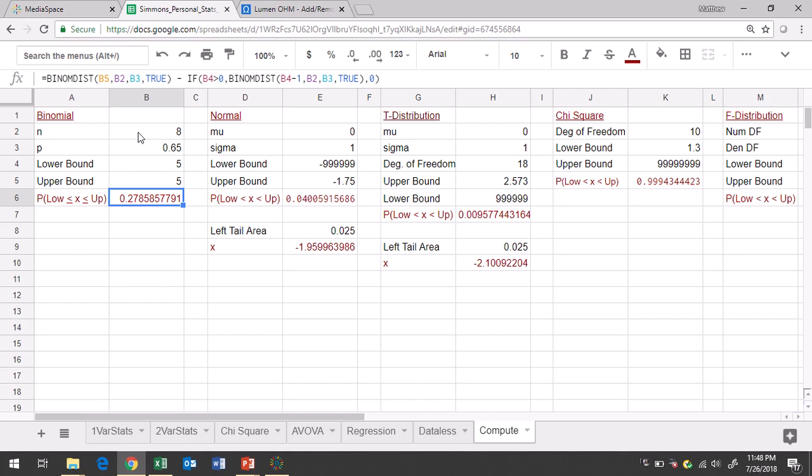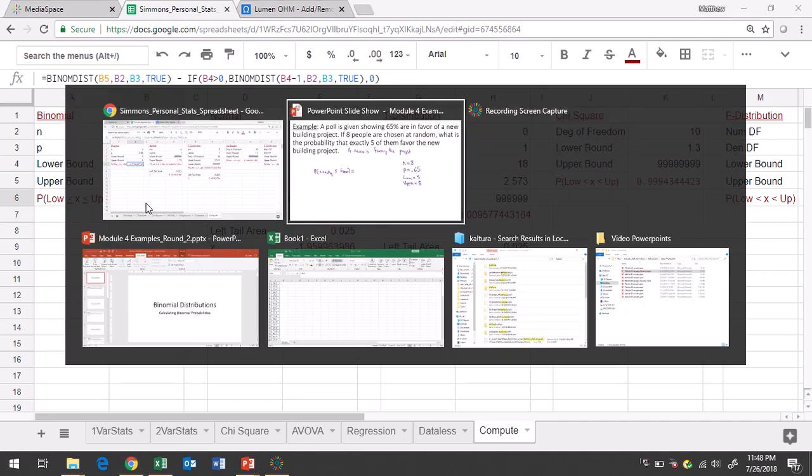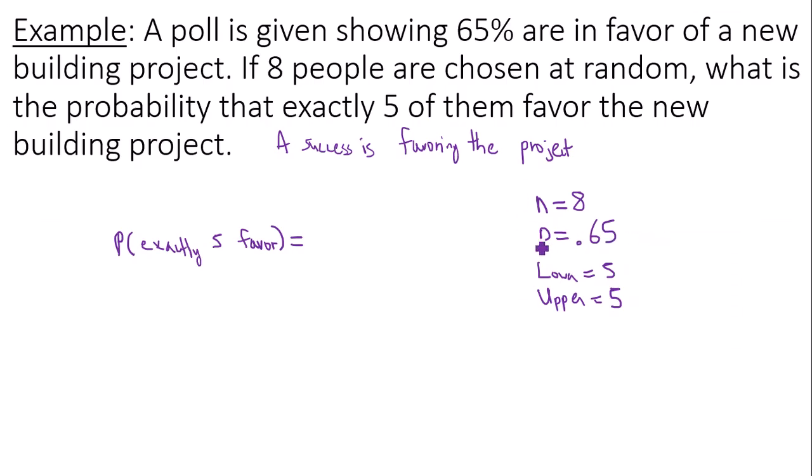Looks like you get 0.2786. We round to four decimal places, 0.2786 is your answer.